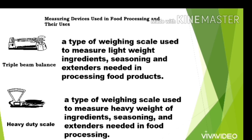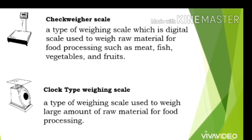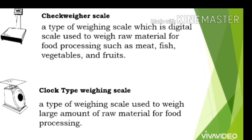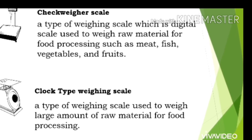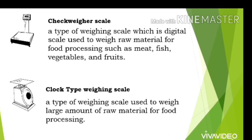Measuring devices used in food processing and their uses: Triple beam balance, a type of weighing scale used to measure lightweight ingredients, seasoning, and extenders. Heavy duty scale, a type of weighing scale used to measure heavyweight ingredients, seasoning, and extenders. Check Weigher Scale, a digital weighing scale used to weigh raw material for food processing such as meat, fish, vegetables, and fruits. Clock Type Weighing Scale, used to weigh large amounts of raw material for food processing.